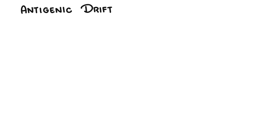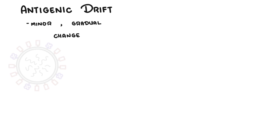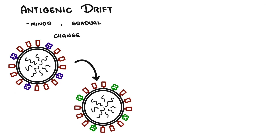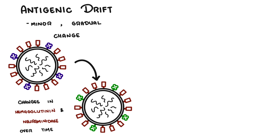Antigenic drift refers to minor, gradual changes in the virus that can lead to a new virus strain. These changes affect the virus's surface proteins — the hemagglutinin and the neuraminidase — which are normally recognized by our immune system.